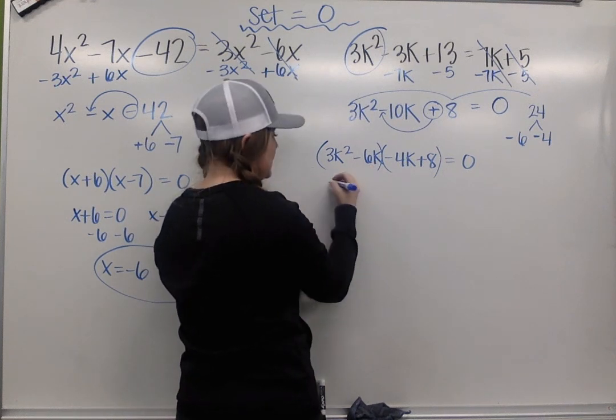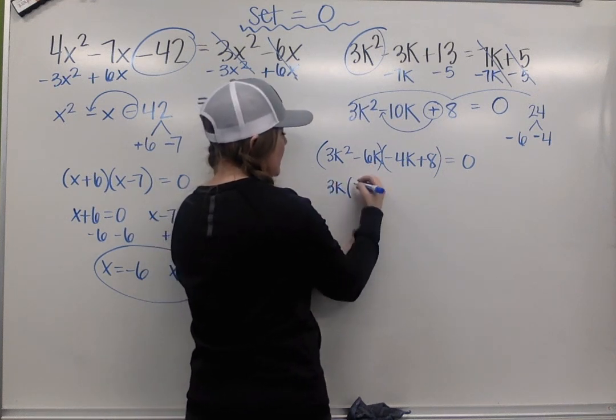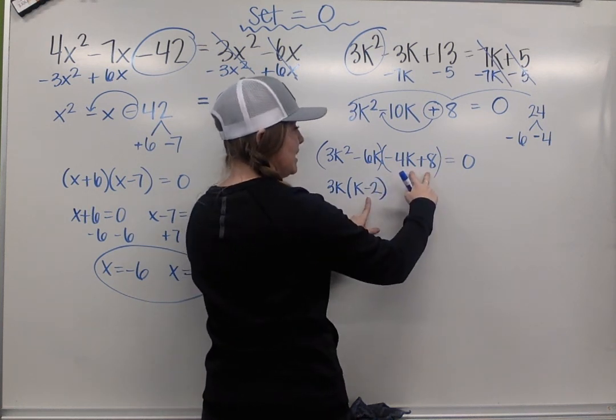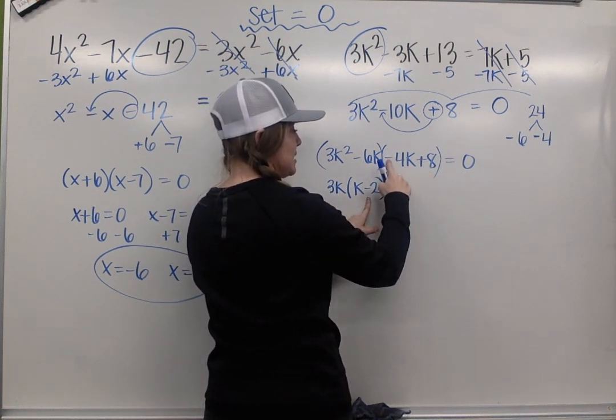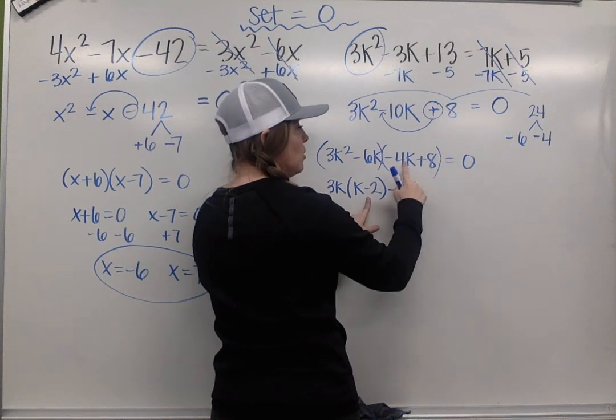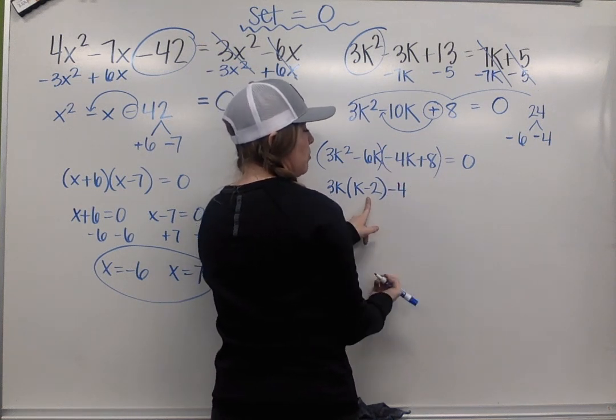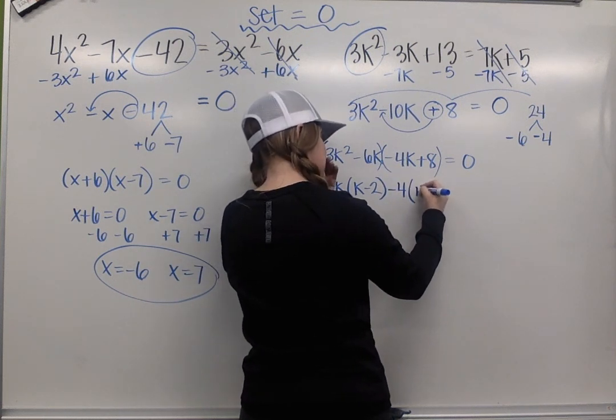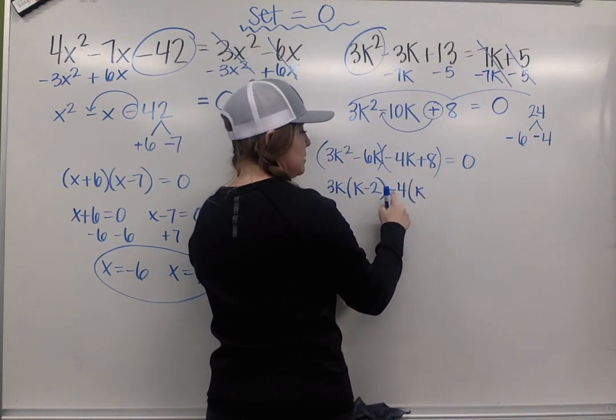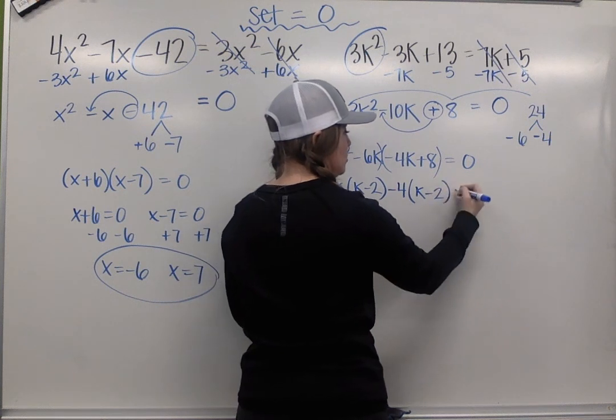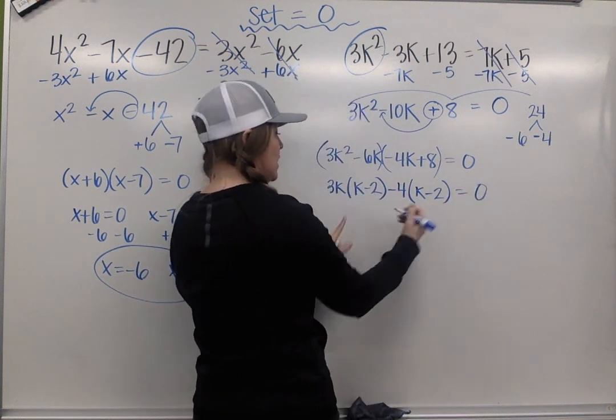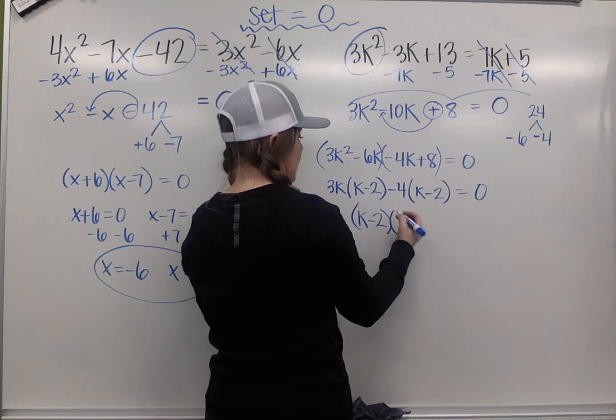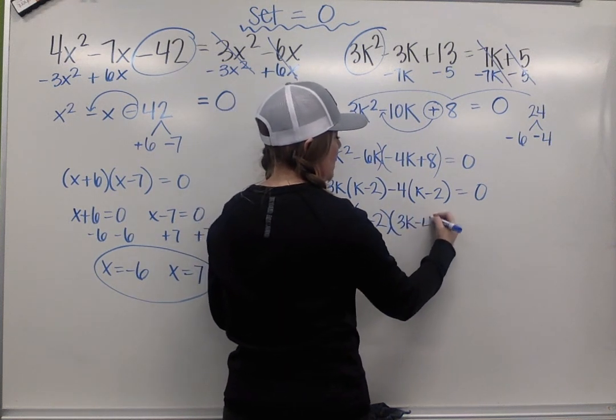3k² - 6k. They have a 3k in common, which leaves me with k - 2. For -4k + 8, since this is negative, I'm going to factor out -4. -4k divided by -4 is k. 8 divided by -4 is -2. So together, we have k - 2 again. And I'm left with 3k - 4.